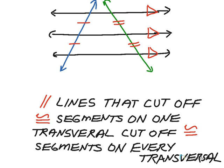The segments are longer on the green transversal because it's at more of an angle, at a greater slant, but they're still congruent to each other. And with a third transversal, the two pieces it divides between the parallel lines are also congruent to each other. So if parallel lines cut off congruent segments on one transversal, they will cut off congruent segments on any transversal, which leads us to the next theorem.